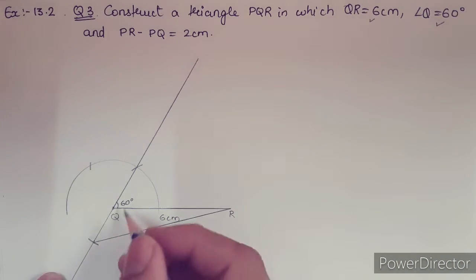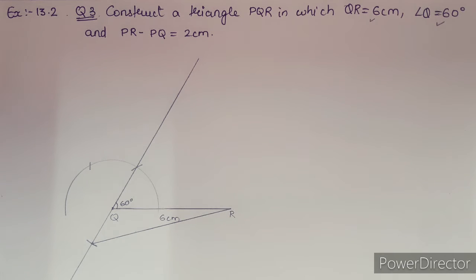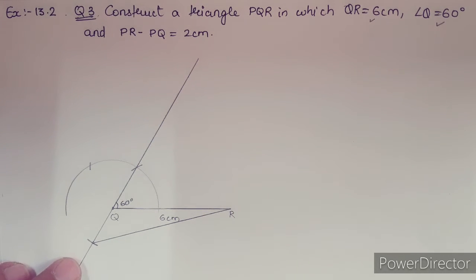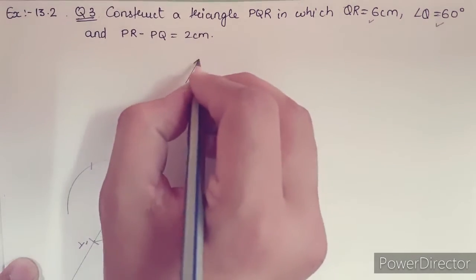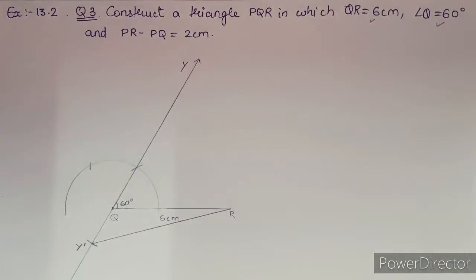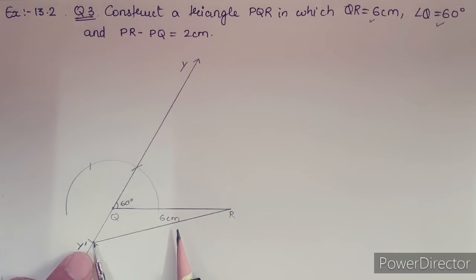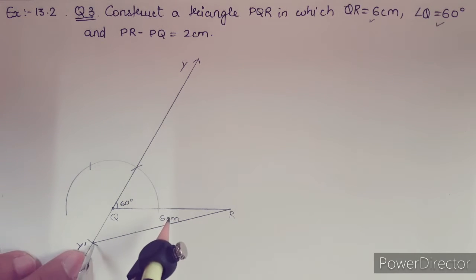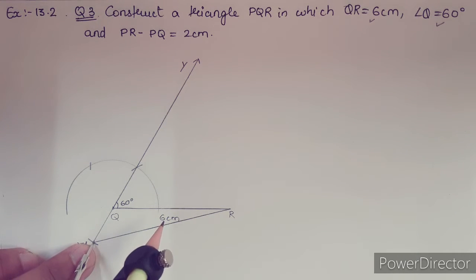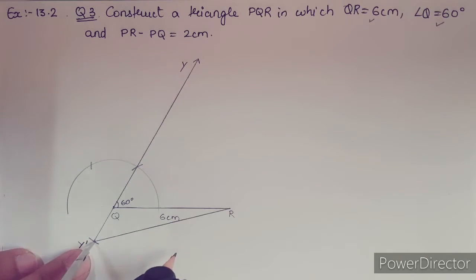Now you need to connect R and this dot over here. This is 2 cm. Now you have to draw the perpendicular bisector of this R. Let this be Y dash, and let this be Y. You already know how to draw a perpendicular bisector. Just need to take little more radius than the usual one. I'm taking this much. Now carefully draw the perpendicular bisector.